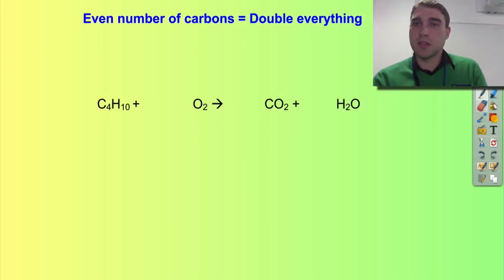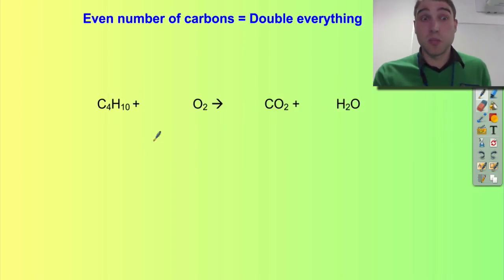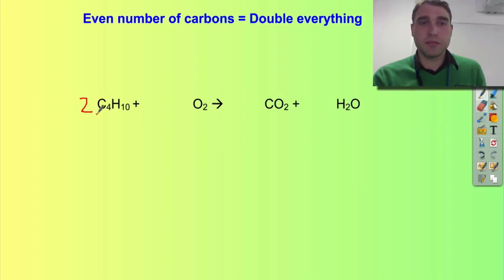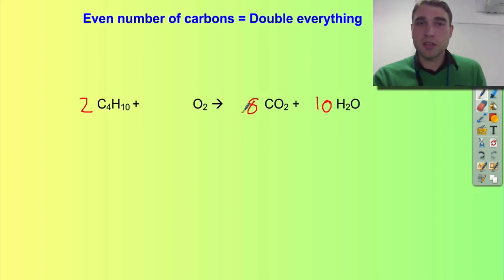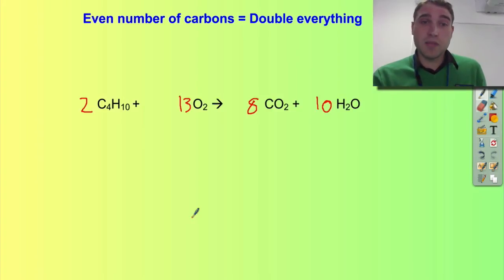One more example where I have to double everything: butane, C4H10. I'm going to start straight out by doubling, so now I've got two times four — eight carbons on this side, so I'm going to need eight carbon dioxides. I've got twenty hydrogen atoms, so I'm going to need ten water molecules. Adding up my oxygens: eight times two is sixteen, plus ten is twenty-six, so I need thirteen oxygen gas molecules. Again, we're avoiding having six and a half oxygens — that's what we're avoiding by doing this doubling.